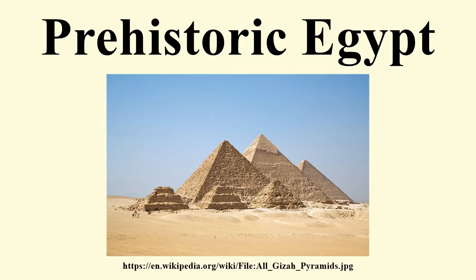The Naqada III period, from about 3,200 to 3,000 BC, is generally taken to be identical with the protodynastic period, during which Egypt was unified. Naqada III is notable for being the first era with hieroglyphs, the first regular use of serekhs, the first irrigation, and the first appearance of royal cemeteries.